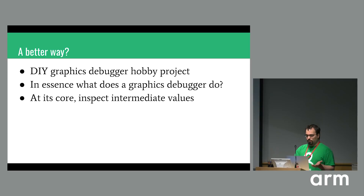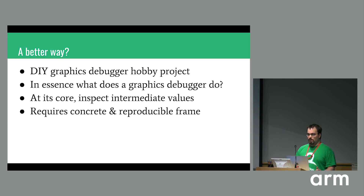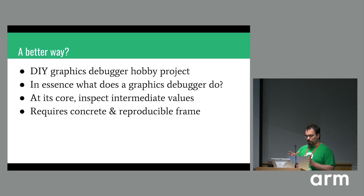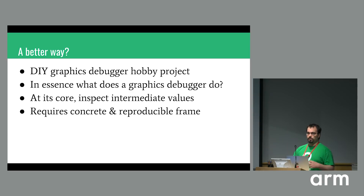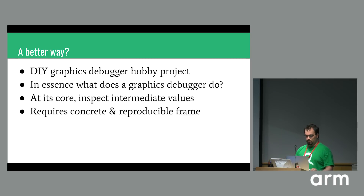So I wondered: what would it take to write a graphics debugger? What at its core does a graphics debugger do? The main thing is it allows you to inspect what is happening midway through a frame — to take apart the frame and see the intermediate results being generated, used, and consumed to get to the final frame result. In order to do that, you need a concrete representation of the frame. You need to pick it apart, see what the inputs are at any given point, see what the pipeline state is, and be able to go back and forth through the frame.